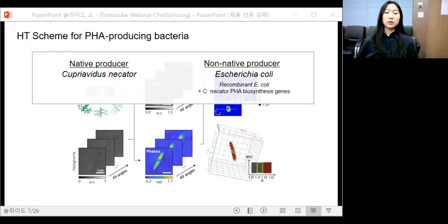In this study, we selected two representative bacterial strains. First is Cupriavidus necator, which is the best studied native PHA producer. And the second is the recombinant E. coli strain, which is the engineered strain to produce PHA by introducing C. necator's PHA biosynthesis genes. For the two strains, we did comparative analysis to capture the unique characteristics of PHA granules.